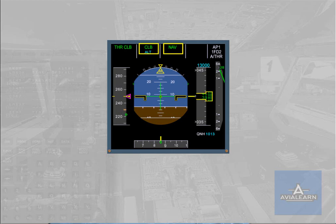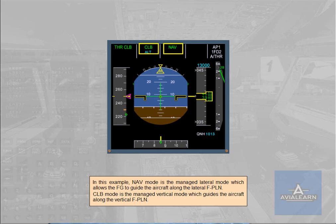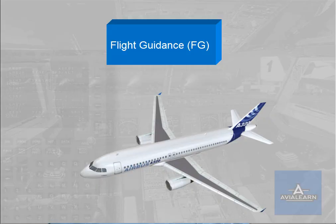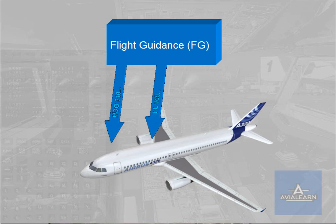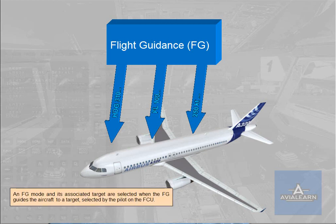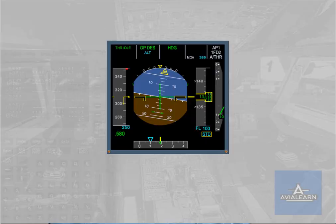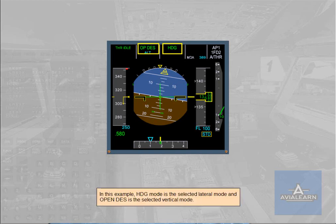Climb mode is the managed vertical mode which guides the aircraft along the vertical flight plan. An FG mode and its associated target are selected when the FG guides the aircraft to a target selected by the pilot on the FCU. In this example, heading mode is the selected lateral mode and open descent is the selected vertical mode.